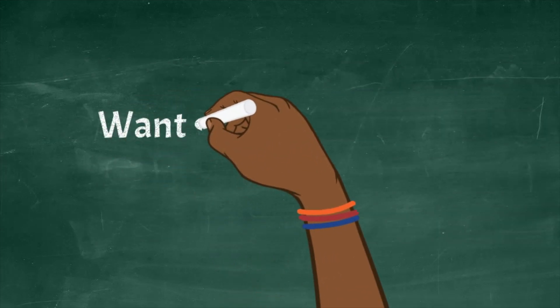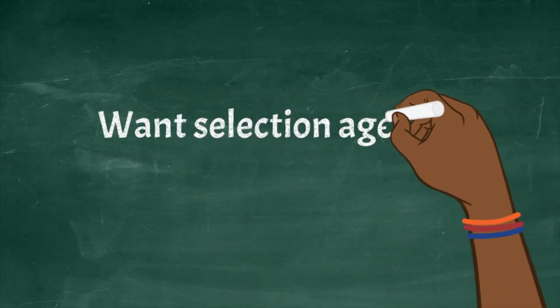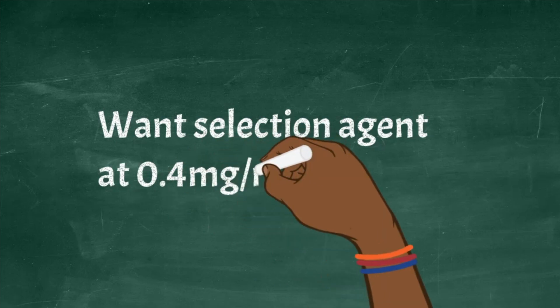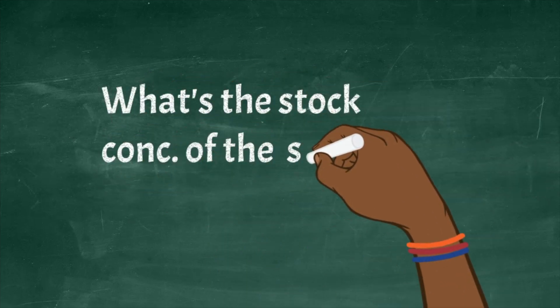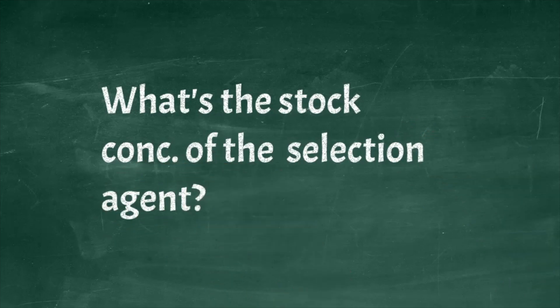Let's say we want to make 0.4 mg per ml of our selection agent. The first thing we need to ask ourselves is what's the stock concentration of the selection agent, or whatever drug or compound that we want to add to the media.